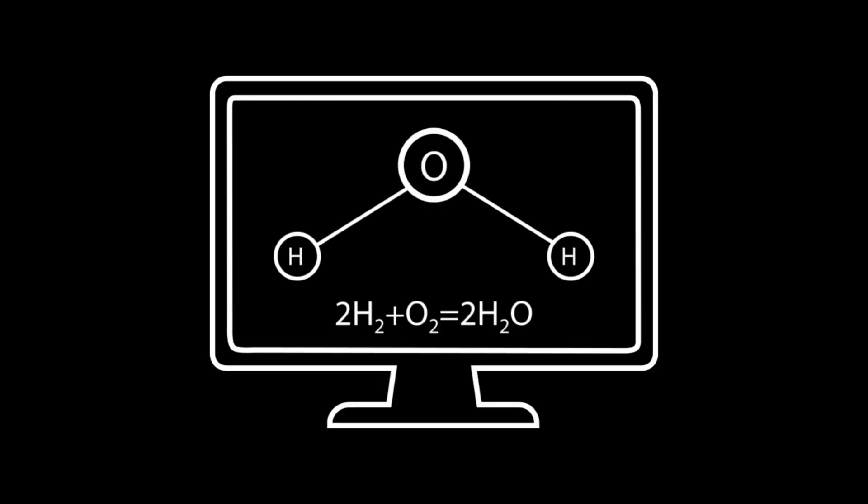Stoichiometric calculations mainly involve three conversions: mole-to-mole, mole-to-mass, and mass-to-mass conversion. Mole-to-mole calculations are one of the simplest types of stoichiometric calculations. They involve using the mole ratio from a balanced chemical equation to convert between the moles of one substance to the moles of another.